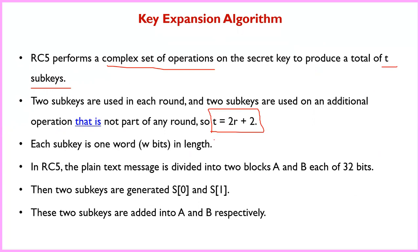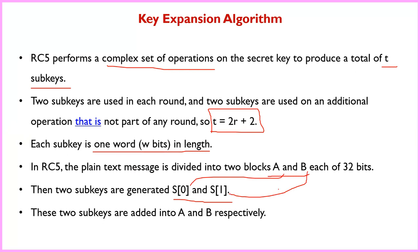Each sub-key has one word length equal to W bits. The RC5 plaintext is divided into blocks of 32 bits. The sub-keys generated are stored in an array in the form S[0] and S[1]. The sub-keys S[0] and S[1] are added into registers A and B respectively during processing.